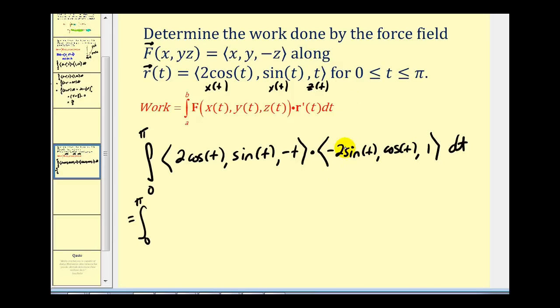So we'll have negative four cosine T sine T, plus cosine T sine T, minus T.